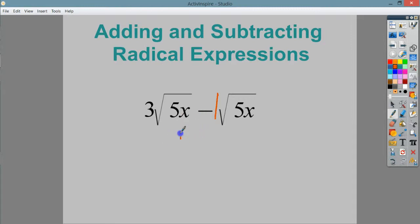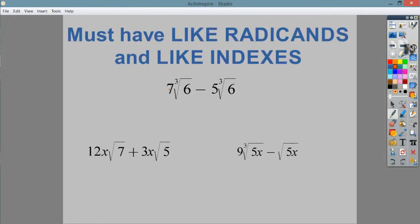I need to know two pieces of vocabulary. The part underneath the radical sign is the radicand. And whatever number goes here, if there's nothing there, we just assume it's 2, so it'd be a square root. This is referred to as the index. In order for me to be able to combine them, I have to have like radicands and like indexes. If one of those two things is off, there's nothing you can do.